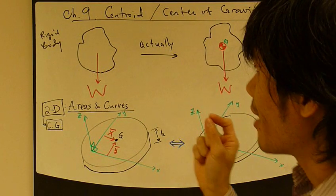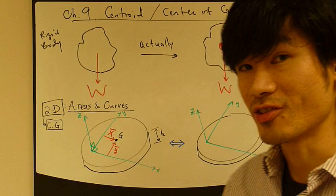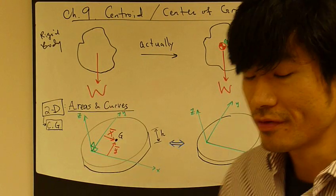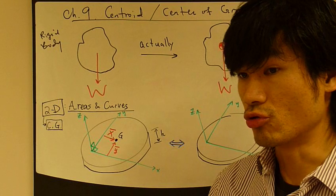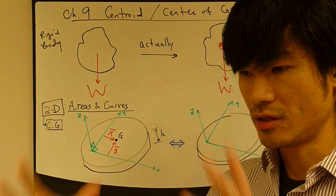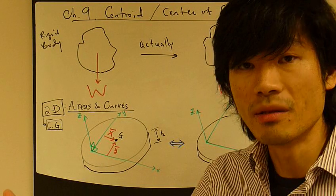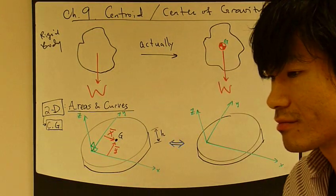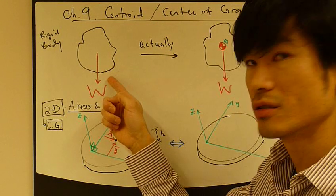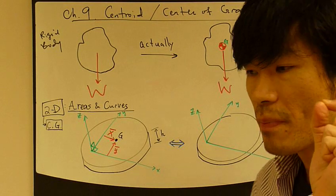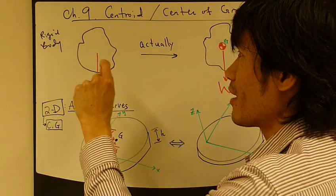The last couple of topics in statics have to do with centroid or center of gravity. They are similar but different — I will explain the difference later. Recall in chapter 7 or 8, we talk about internal forces or friction. You have a rigid body with certain weight, and you draw the weight vector down the middle, easy for a box or a simple beam. But what if the rigid body is complicated in shape? Where do you draw this weight vector? You need to pinpoint exactly where you draw this force vector — that's the whole point of this chapter.